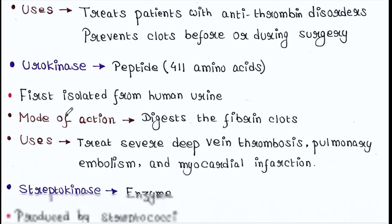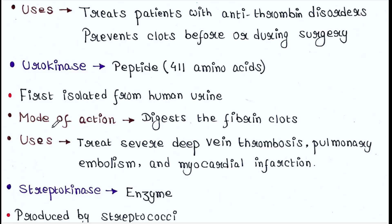Urokinase is a peptide which has 411 amino acids. It was first isolated from human urine. Mode of action: it digests fibrin clots. Uses: it treats severe deep vein thrombosis, pulmonary embolism, and myocardial infarction.